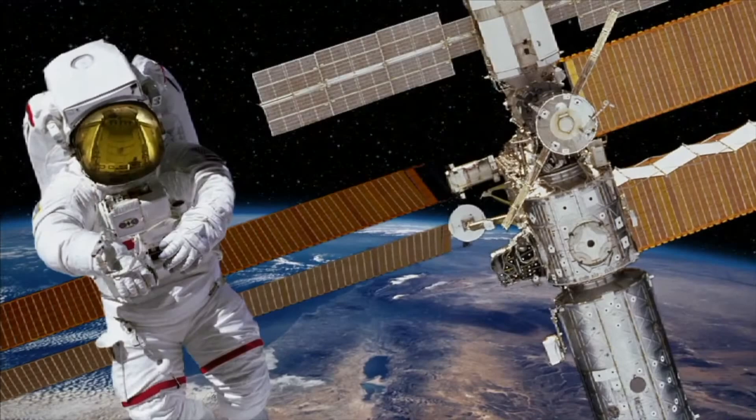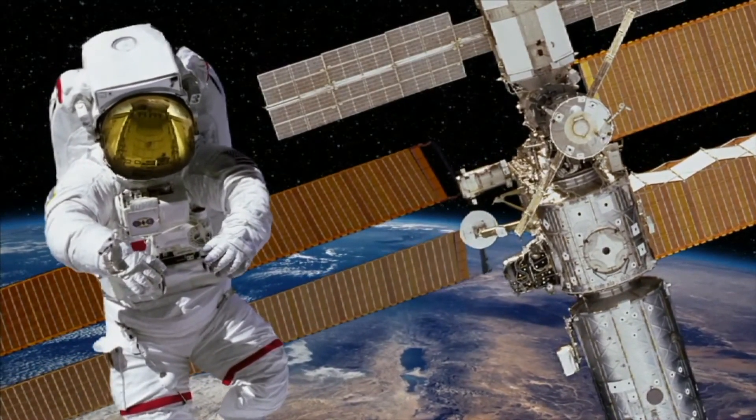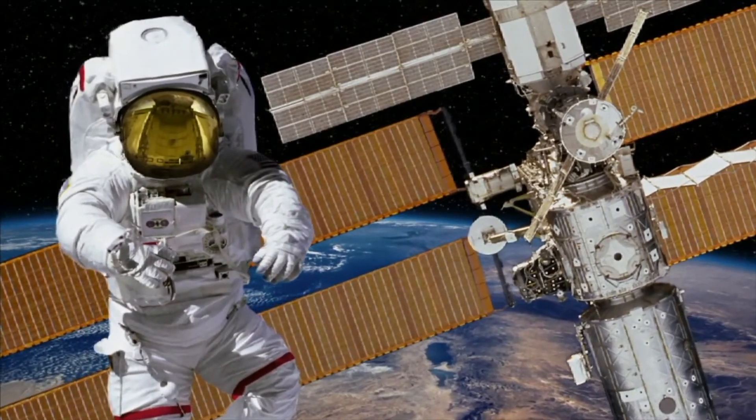Astronauts have sometimes left things like gloves, tools, and other junk in space, which are now orbiting the Earth.